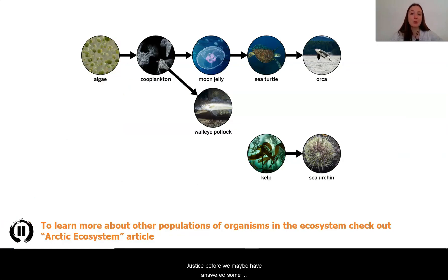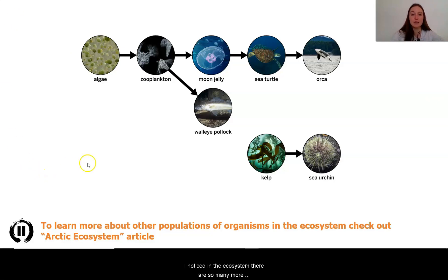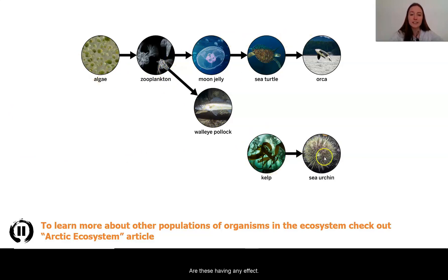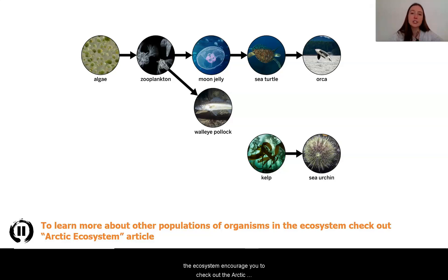Just as before, we maybe have answered some questions, but there is still so much left for us to understand. I notice in the ecosystem there are so many more organisms than just the zooplankton and the sea turtles. Are these having any effect? To learn more about the other populations of organisms in the ecosystem, I encourage you to check out the Arctic Ecosystem article if you haven't already.